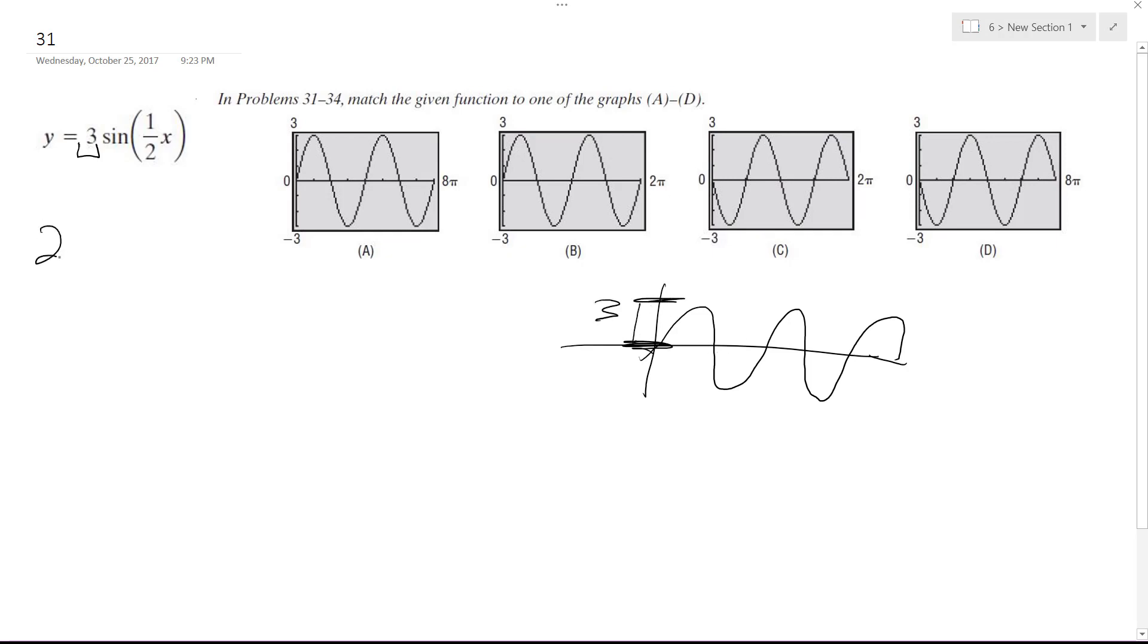Then the period is going to be 2π divided by ω, which is going to be 2π divided by the coefficient in front of x, which is 1/2. So it's going to be equal to 2π times 2 over 1, so it's going to be 4π.